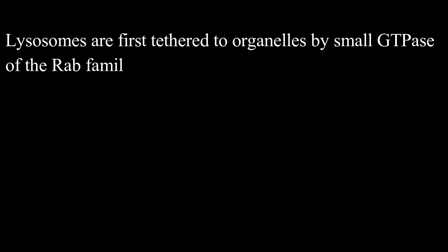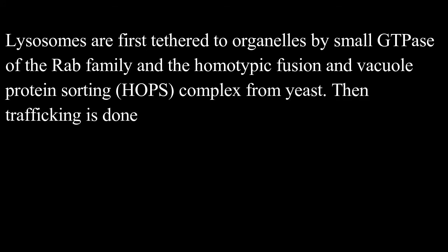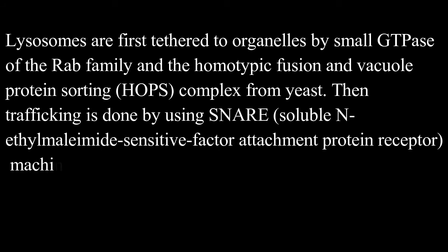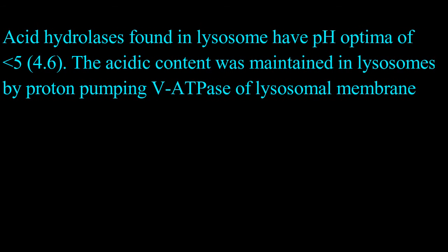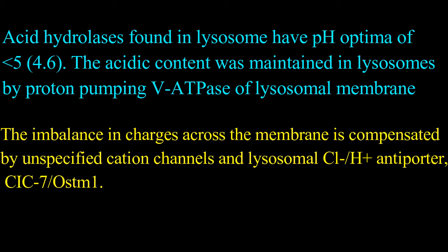Lysosomes are first tethered to organelles by small GTPases of the RAB family and the homotypic fusion and vacuole protein sorting, that is HOPS complex from yeast. Then trafficking is done by using SNAREs, that is soluble N-ethylmaleimide sensitive factor attachment protein receptor proteins. Acid hydrolases found in lysosomes have pH optima of 4.6. The acidic content is maintained in lysosomes by proton pumping V-type ATPase of the lysosomal membrane.